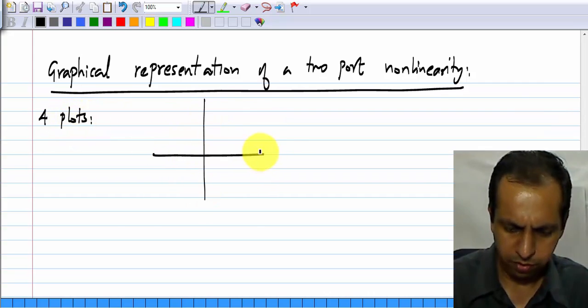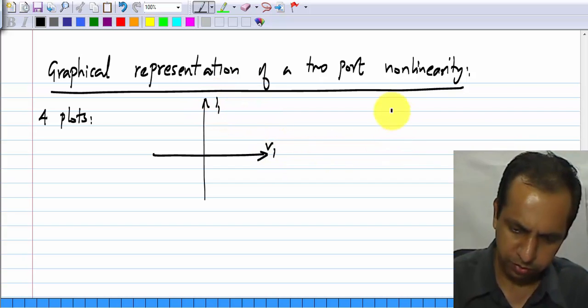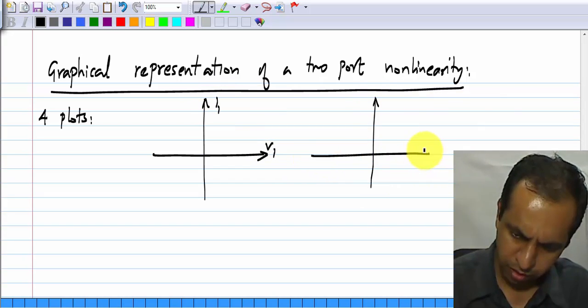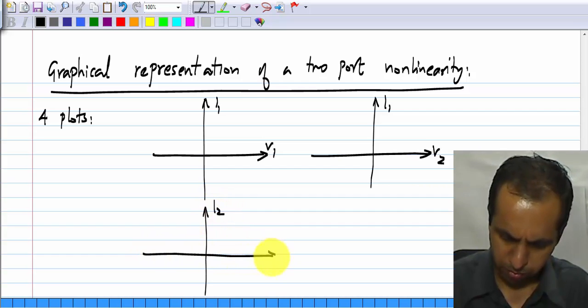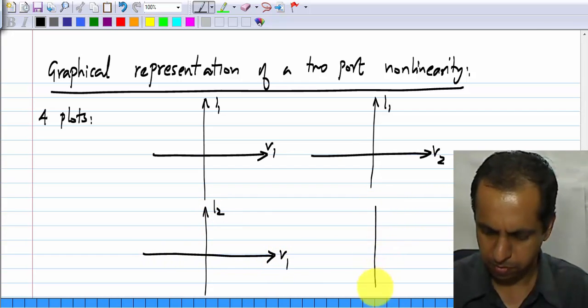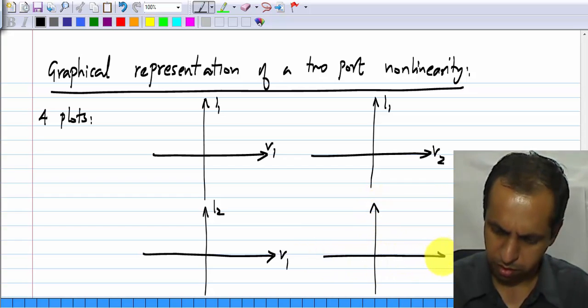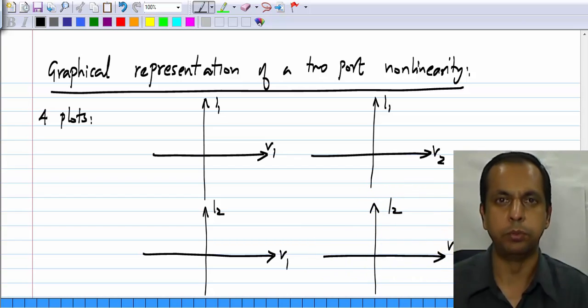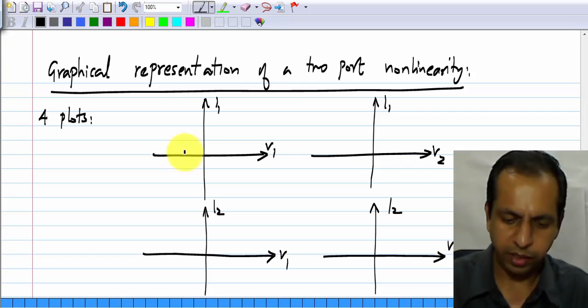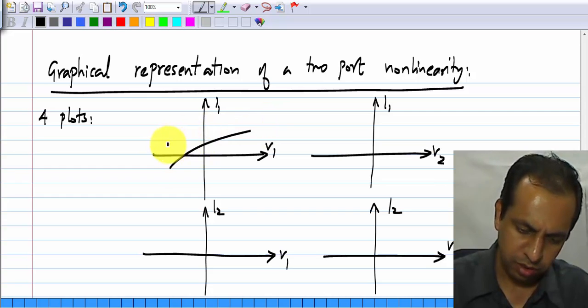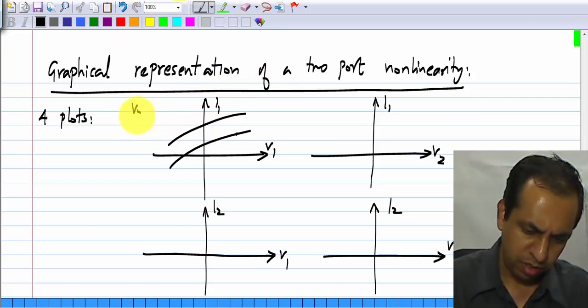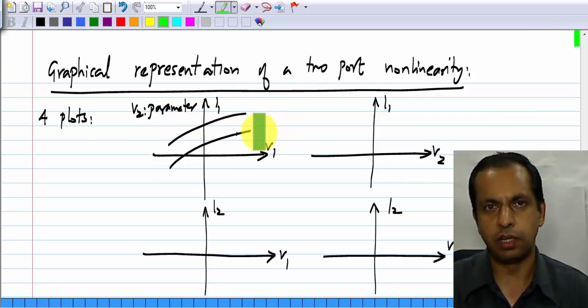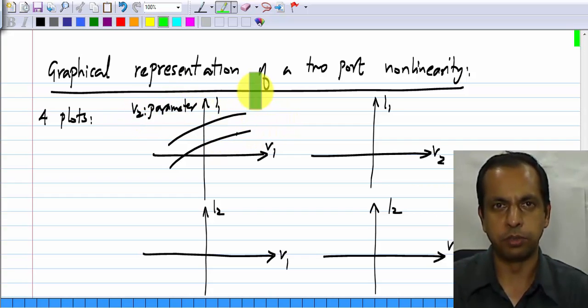We'll have I1 versus V1, I1 versus V2, I2 versus V1, and I2 versus V2. And they could be anything, I will just show some representative examples. In this plot for instance, V2 is the parameter. What it means is, for each of these curves, V2 is a constant and for different curves, we choose different constant values of V2.